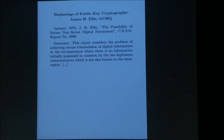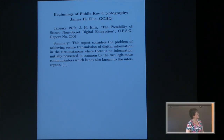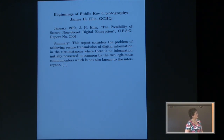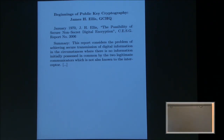January 1970: 'The possibility of secure non-secret digital encryption.' Summary: this report considers the problem of achieving secure transmission of digital information in circumstances where there is no information initially possessed in common by the two legitimate communicators which is not also known to the interceptor. Quite an interesting question.